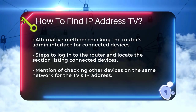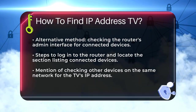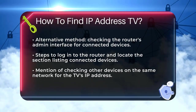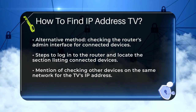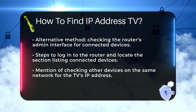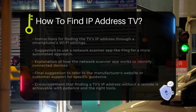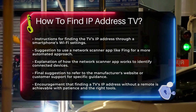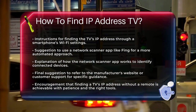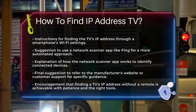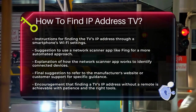For a more automated approach, you can use a network scanner app like Fing on your smartphone or tablet. This app scans your local network and provides a list of all connected devices along with their IP addresses. Simply open the app, allow it to scan your network, and look for your TV in the list to find its IP address.